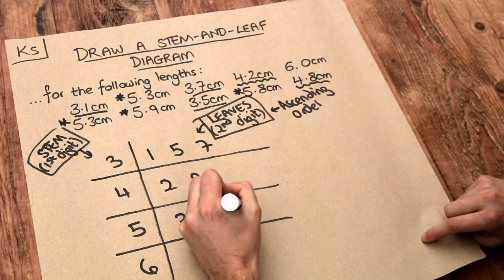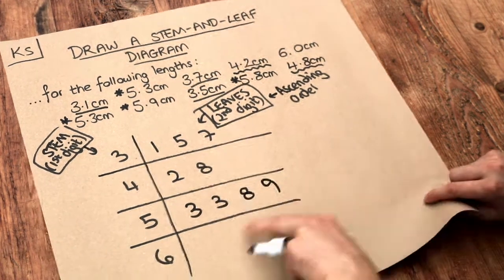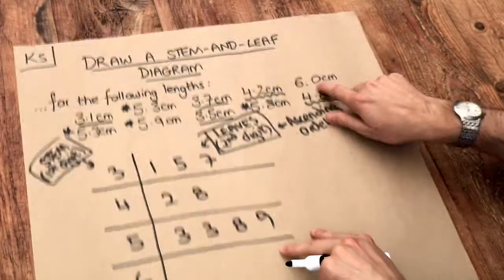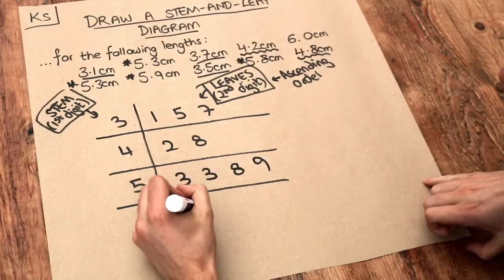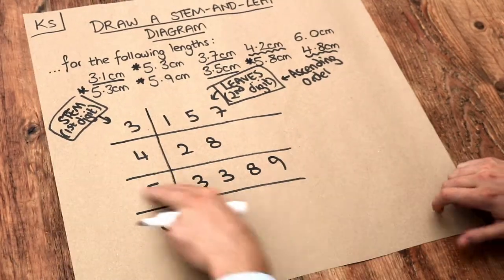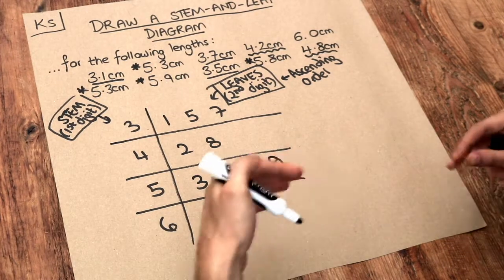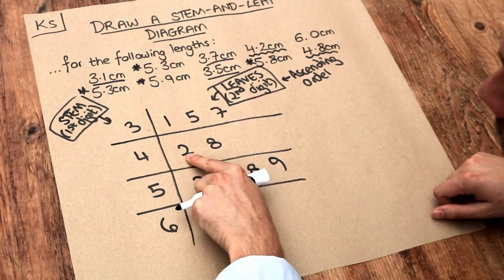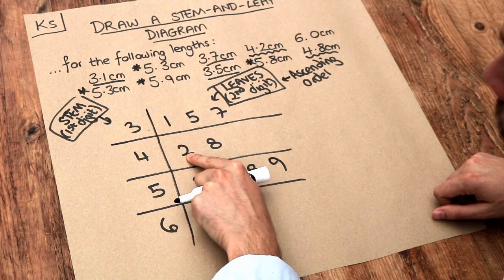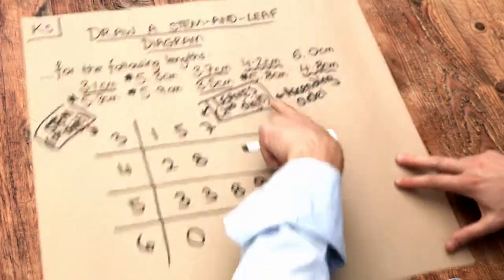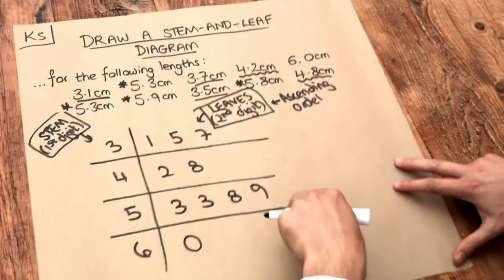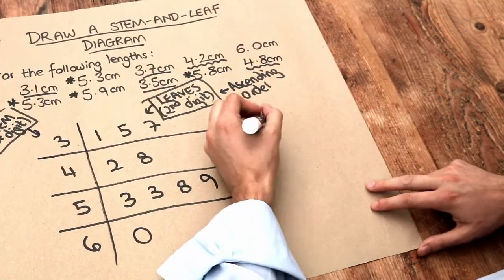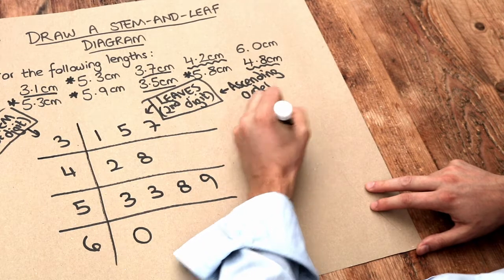Finally, there's only one number left starting with six, and the second digit is zero. These numbers are meaningless without some kind of key to say how to interpret them — for example, does this two mean 42 or 4.2 as we actually have here? We haven't indicated the unit either, so that's what we need a key for.